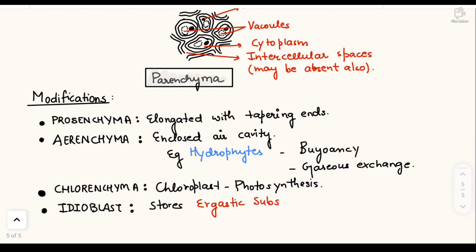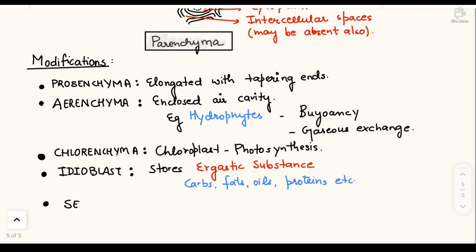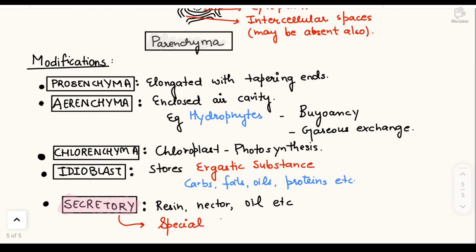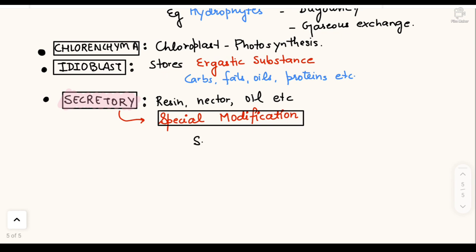Idioblasts are parenchyma tissues that store ergastic substances. We discussed earlier that meristematic tissues don't have ergastic substances, but parenchyma — being permanent and specialized — stores ergastic substances in the form of carbohydrates, fats, oils, and proteins depending on the plant's needs. Next, and very importantly, is secretory parenchyma, where we see the presence of resins, nectars, oils, tannins, and mucilage.